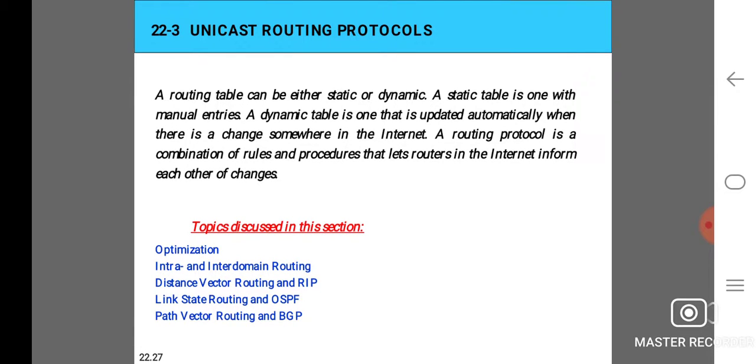Unicast routing protocols use a routing table that can be either static or dynamic. A static table is one with manual entries. A dynamic table is one that is updated automatically when there is a change somewhere in the internet. A routing protocol is a combination of rules and procedures that lets the routers in the internet inform each other of changes.